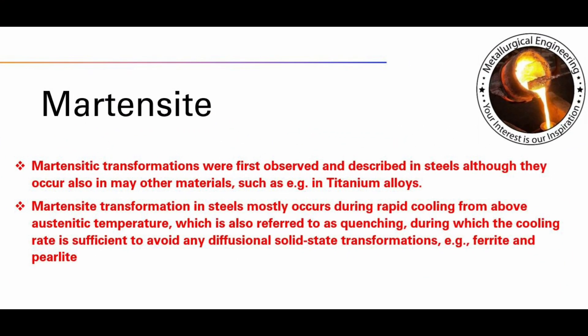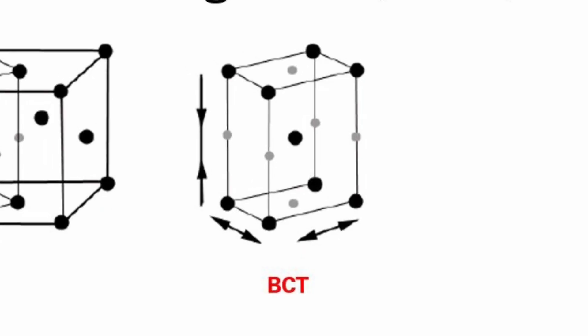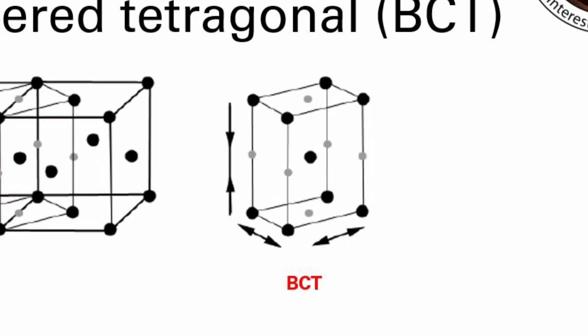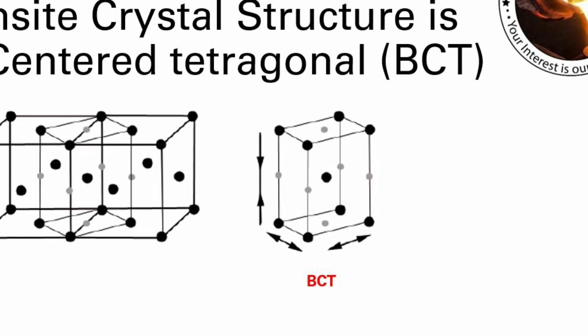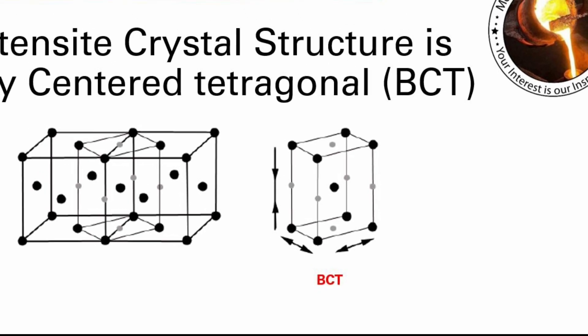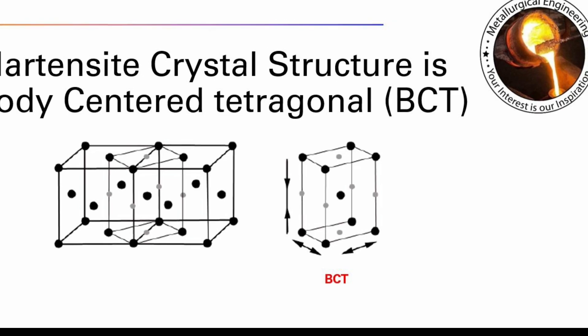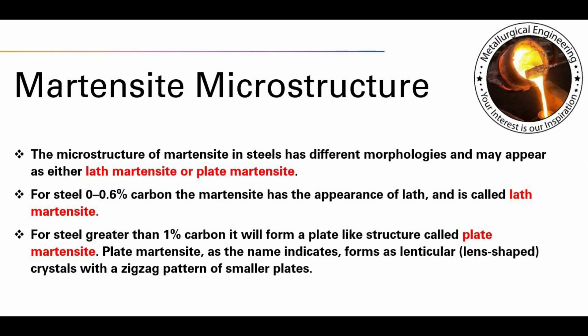Martensite transformations were first observed and described in steels, although they occur also in many other materials, such as titanium alloys. The microstructure of Martensite is body-centered tetragonal. The main distortion transformation is shown in this figure. The microstructure of Martensite in steels has different morphologies and may appear as either Lath Martensite or Plate Martensite.